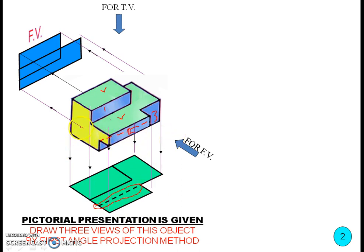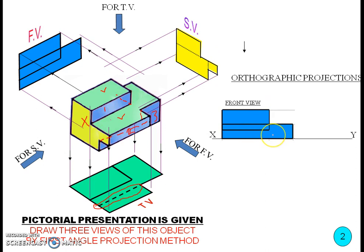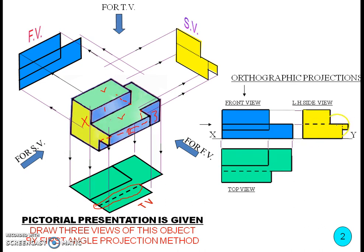When considering the side view, we can only see one plane, but there are two hidden edges — one edge exactly below the visible edge, and another edge that we cannot see. So these two edges should be represented in the side view. We show them as hidden edges — dashed lines — in the left side view and in the top view.